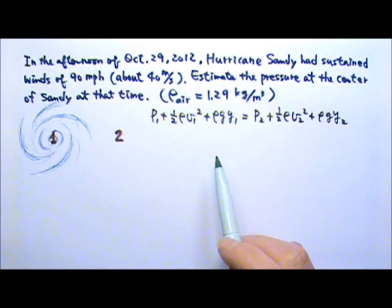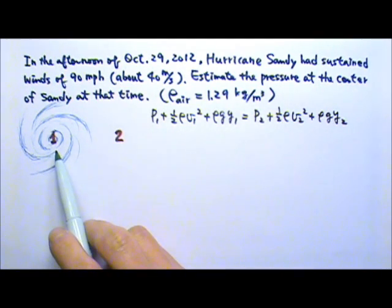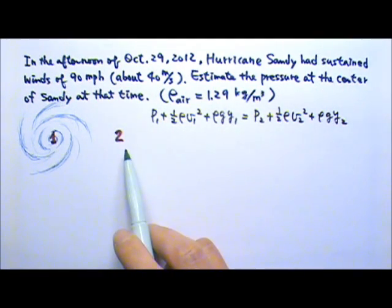Again, we're going to use Bernoulli's equation for our flowing fluid problem. I'll use 1 for the center of Sandy and 2 for a region that is calm.